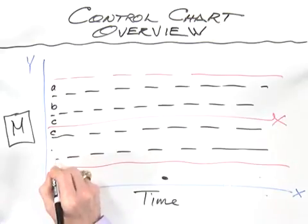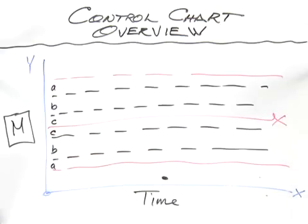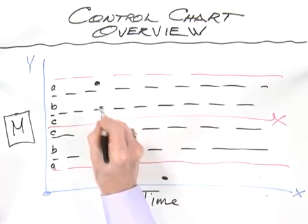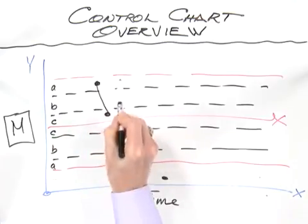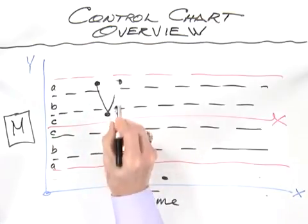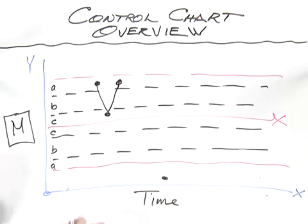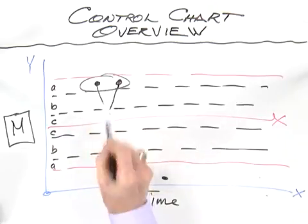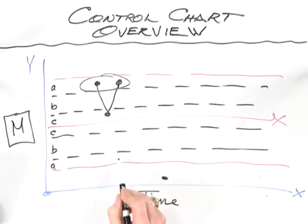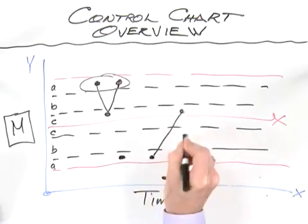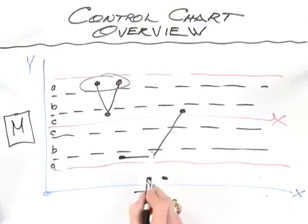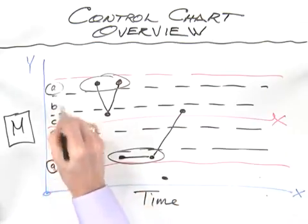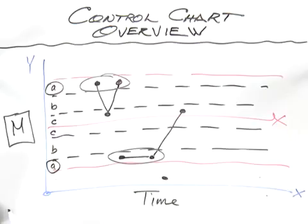There's two key tests that we look at to understand whether or not data that fall even between the control limits are demonstrating abnormal patterns. I'm going to again put the C, B, and A zones on here. When you get two out of three data points in zone A or beyond, that's a signal of a special cause.